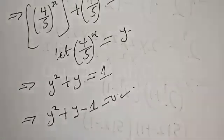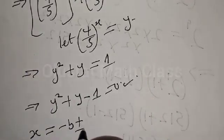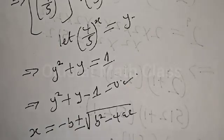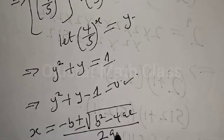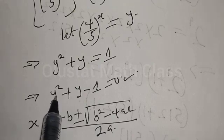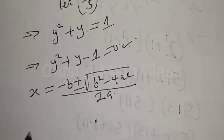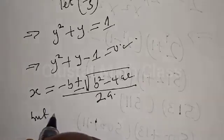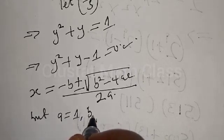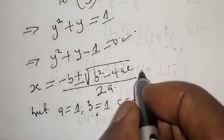This is a quadratic equation. Using the quadratic formula, x equals minus b plus or minus square root of b squared minus 4ac, all over 2a. From our equation, a is equal to 1, b is equal to 1, and c is equal to minus 1.